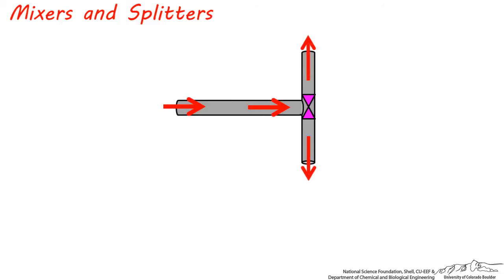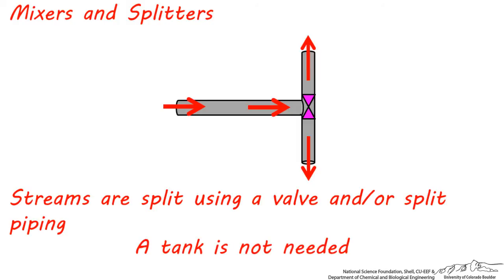Not very different from mixers, a splitter in a plant is usually a pipe and valve system, which controls the splitting of the main stream into two or more streams. The valve and piping system are what are used to split the stream, and a tank or special piece of process equipment is not necessary.